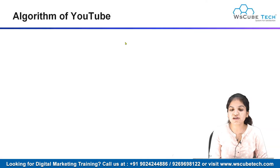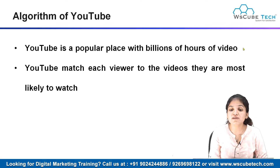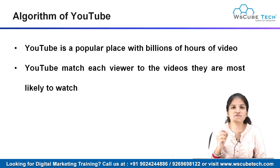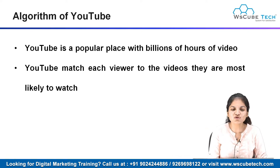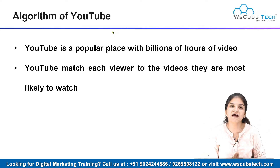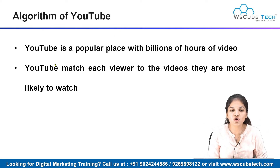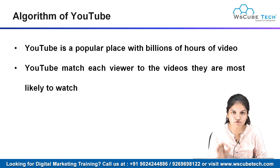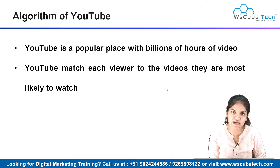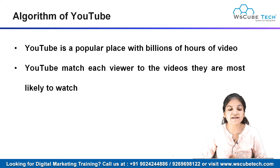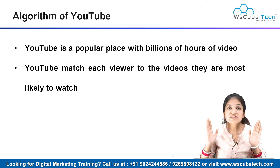As you know, YouTube is a very popular place with billions of hours of video content available, and every minute millions of videos are being uploaded on YouTube. So it is like a hub of videos. The main goal of the YouTube algorithm is to match every viewer to the videos they are most likely to watch — the most related, most relevant video.